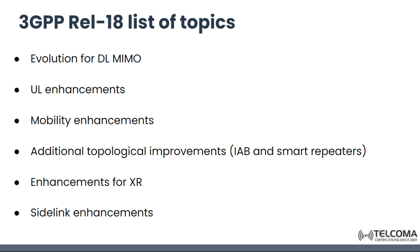The list of topics discussed in 3GPP Release 18 includes: evolution of downlink MIMO (multiple input multiple output), evolution of BL MIMO uplink enhancement, uplink enhancements, mobility enhancements, additional topological improvements — IAB (integrated access and backhaul), smart repeaters, improved IAB activators, enhancements for extreme reality, and sidelink enhancements.